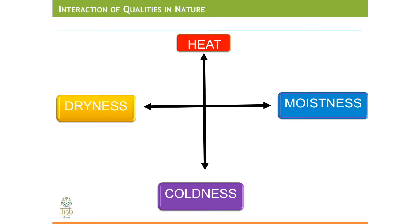Let us talk about the interaction of qualities in nature. To understand the influence that these qualities have on us, it is necessary to understand the interaction of qualities in nature. It is obvious that heat is opposite to coldness, and dryness is opposite to moistness. We are aware that in nature, there is a gradual transition between opposing qualities.